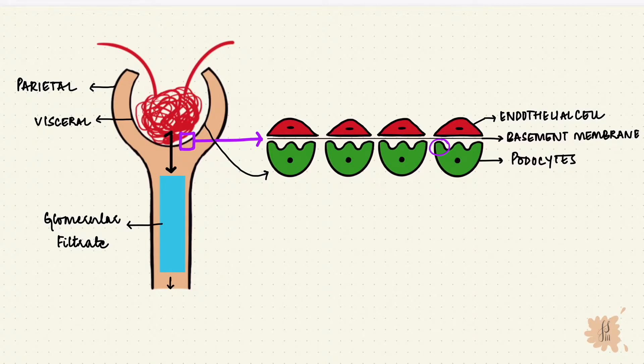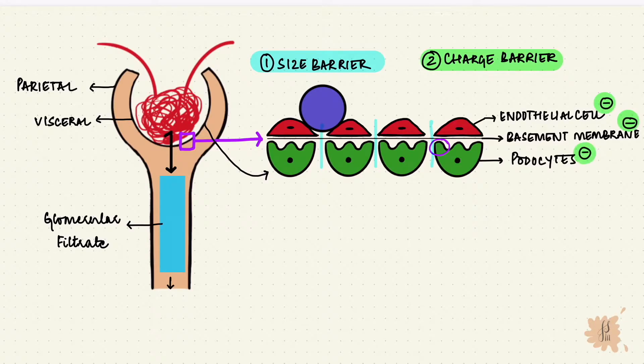The foot processes interdigitate, creating slit clefts, so solutes can pass through the spaces. There's a size restriction - only substances that can fit through these spaces can pass, but also it's a charge barrier. All three layers are negatively charged, so even if a substance is small enough to pass through like albumin, if it's negatively charged, it will get repulsed and can't pass through. Thus the glomerular filtrate is normally free of plasma proteins.